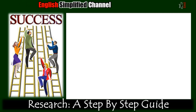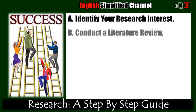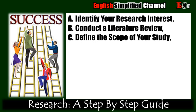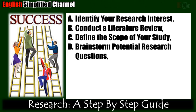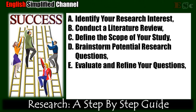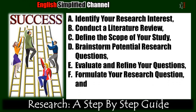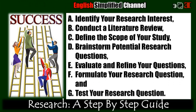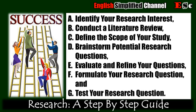The seven steps are: a. Identify your research interest. b. Conduct a literature review. c. Define the scope of your study. d. Brainstorm potential research questions. e. Evaluate and refine your questions. f. Formulate your research question. And g. Test your research question. Let's clarify each point in detail.